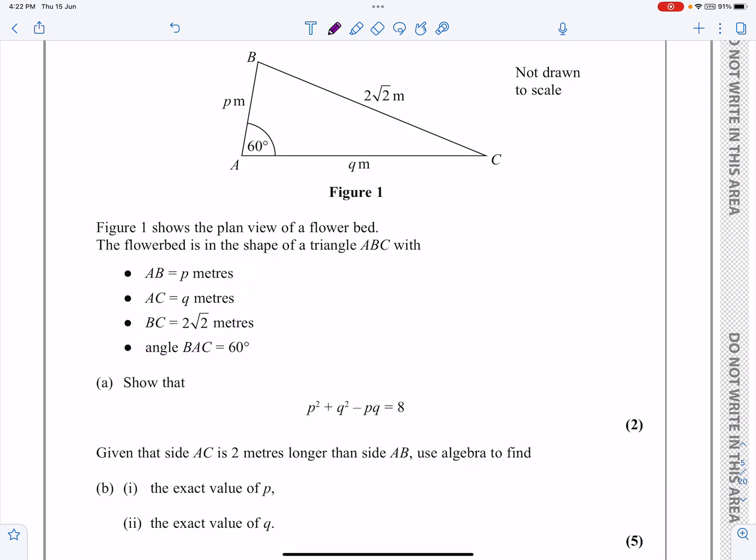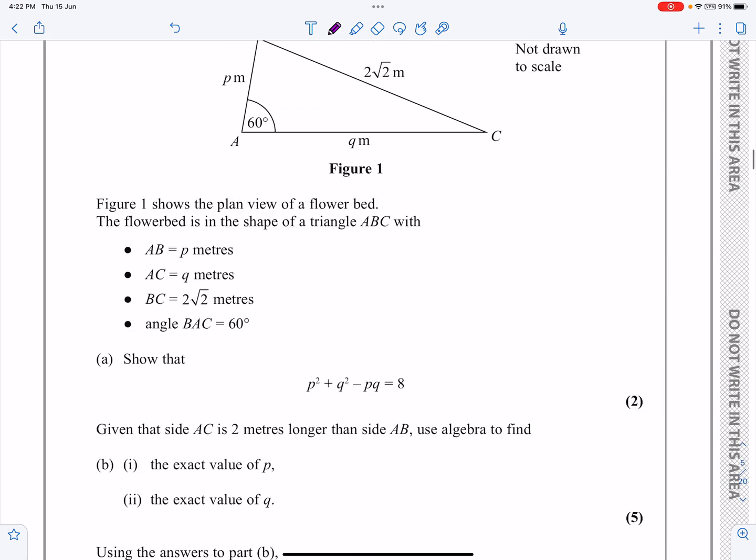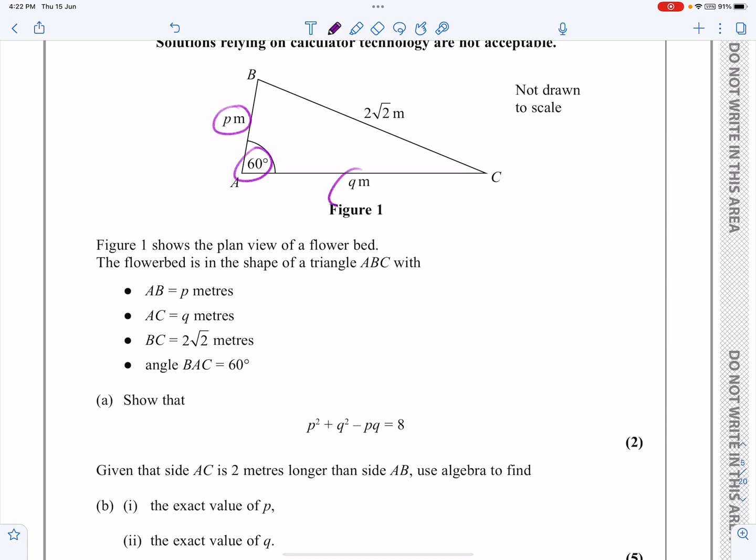It says show that P² + Q² - PQ equals 8. What I'm looking at is a triangle where I've got two sides and the angle in between them. That means I can work out that length there. This strikes me as being a classic cosine rule question. I'm going to apply the cosine rule and hope it will break down to that. Let's just tidy up my diagram.